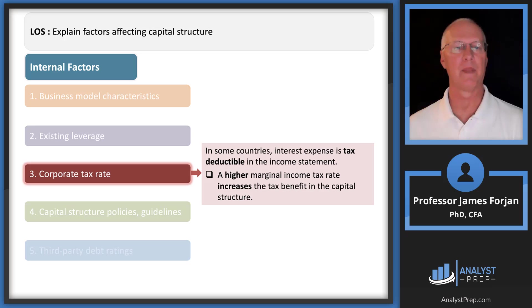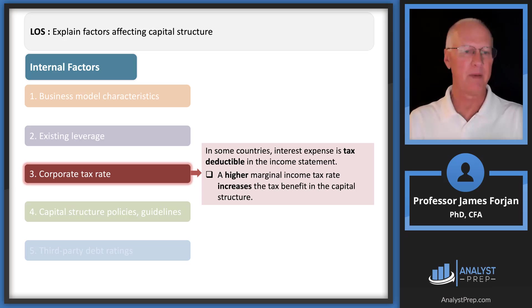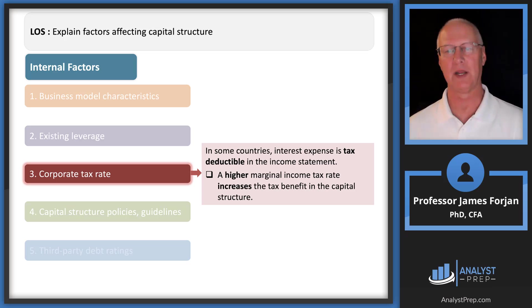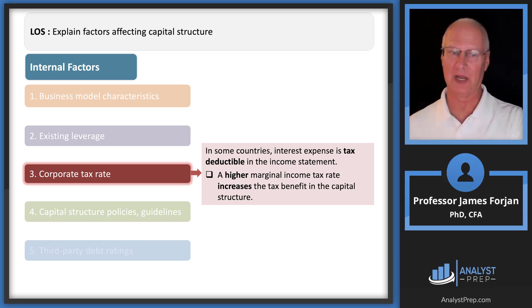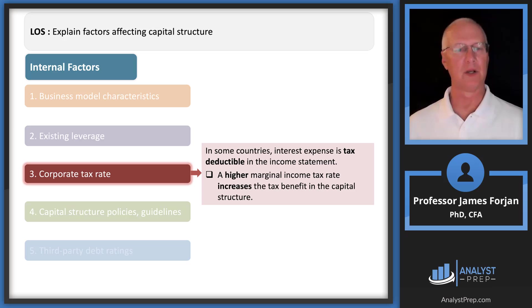Corporate tax rate is important. One of the last slides today will show the trade-off and the tax advantage of debt. The higher the marginal income tax rate, the greater the tax benefit in the capital structure. In 2022 in the U.S. the corporate tax rate is 21%, and depending on who gets elected in 2024, that rate might go up or down. My personal opinion is that it'll probably go up.